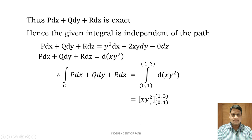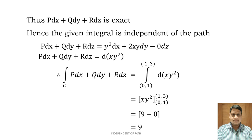We can write xy² and take the limits from (0,1) to (1,3). Substituting the upper limit: x = 1, y = 3, so 1 × 3² = 9. Lower limit: x = 0, so 0 × anything = 0. Therefore 9 − 0 = 9. The answer for this question is 9.